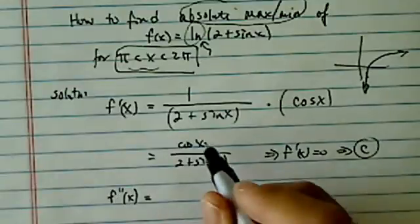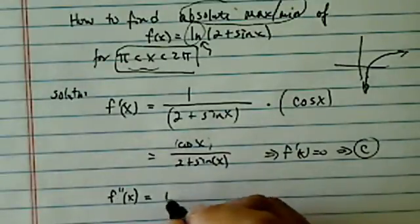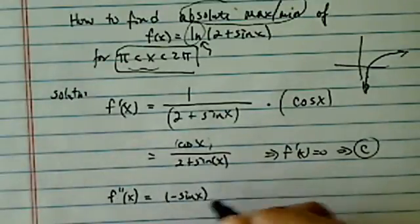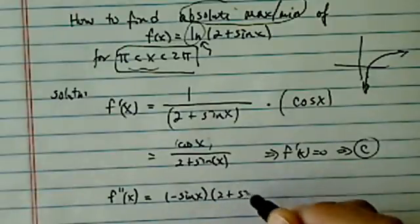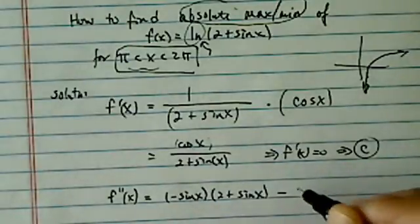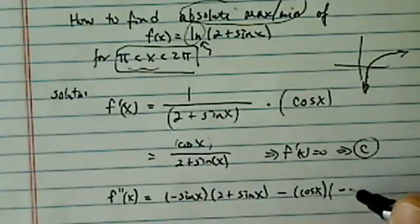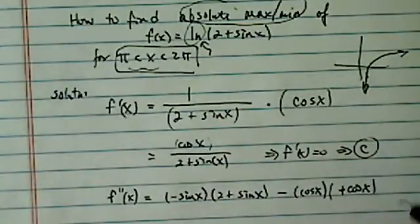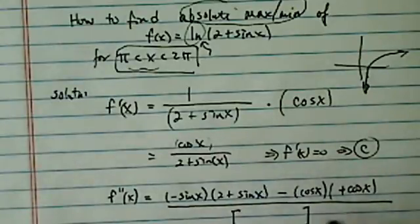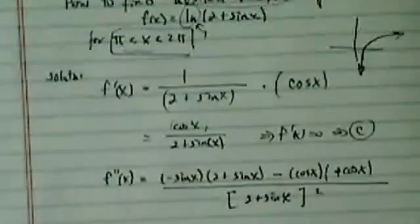The second derivative is take derivative of the first part, which is minus sine x, leave the second part alone, minus, leave the first part alone, derivative of the second one, which is cosine x. The whole thing divided by 2 plus sine x squared on the bottom.